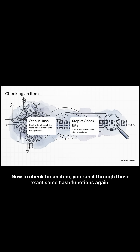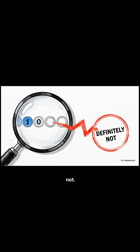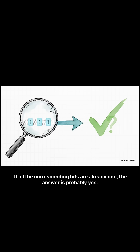To check for an item, you run it through those exact same hash functions again. If any of the bits it points to are still a zero, then the answer is simple: definitely not. But if all the corresponding bits are already one, the answer is probably yes.